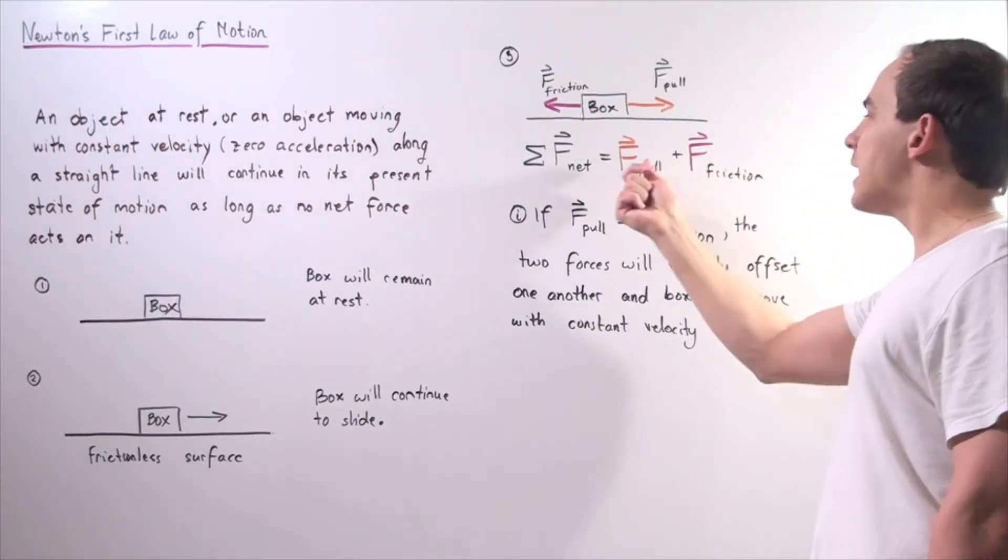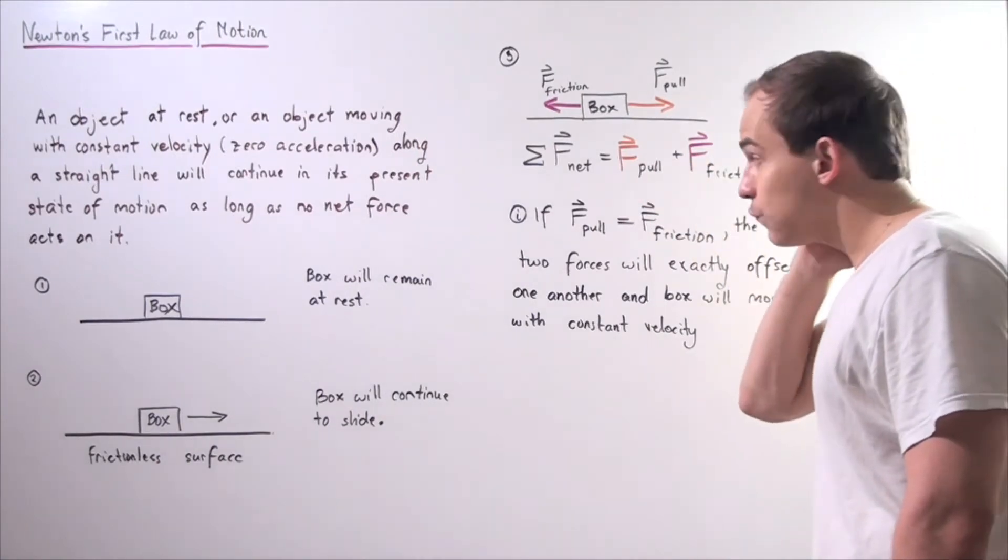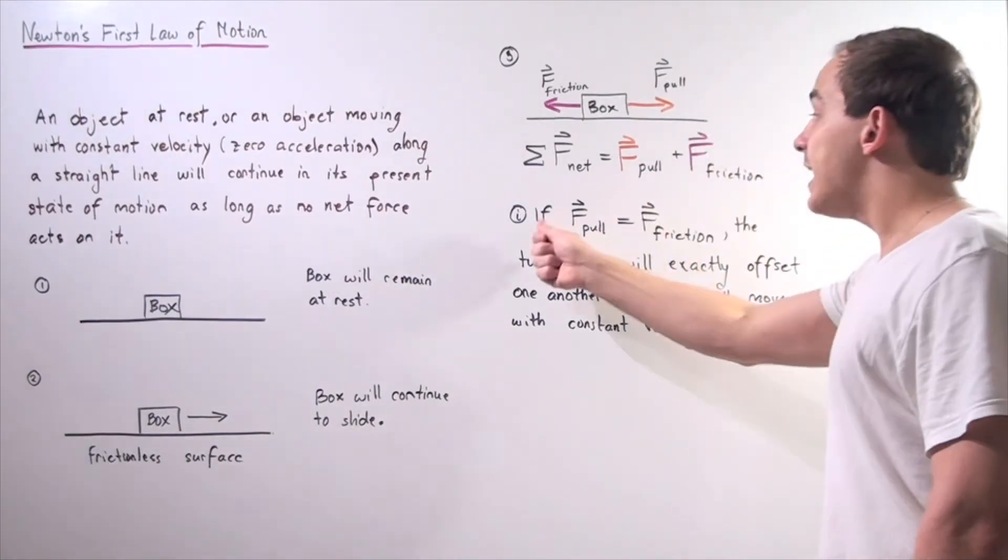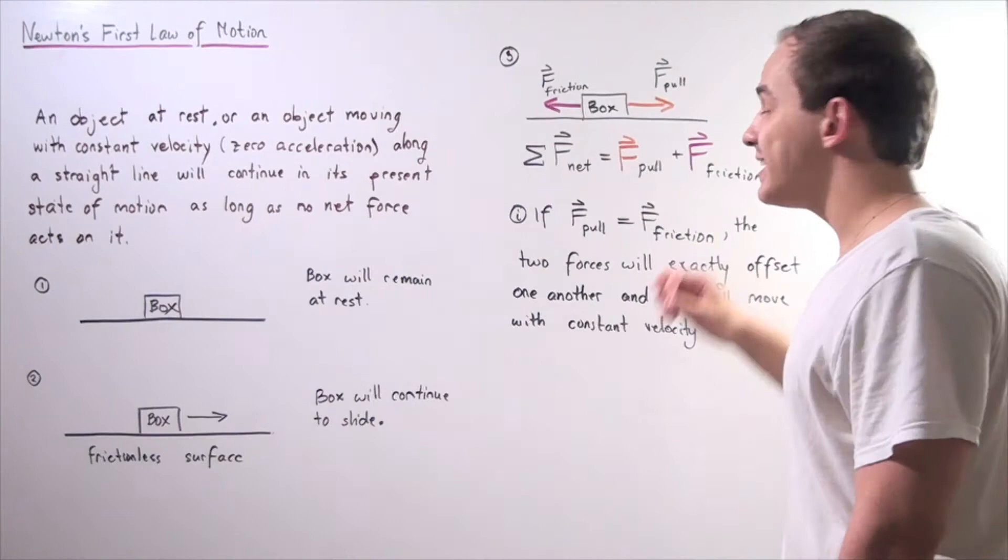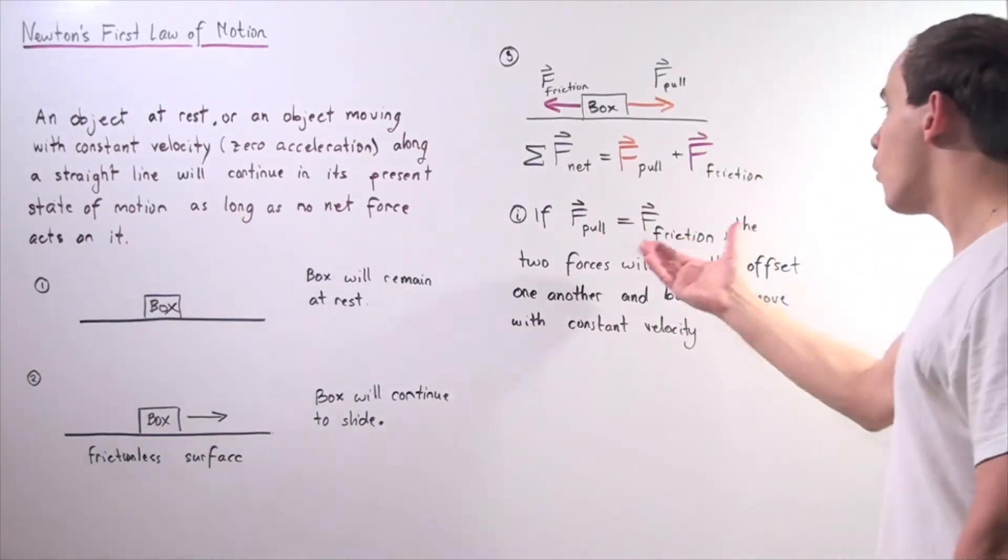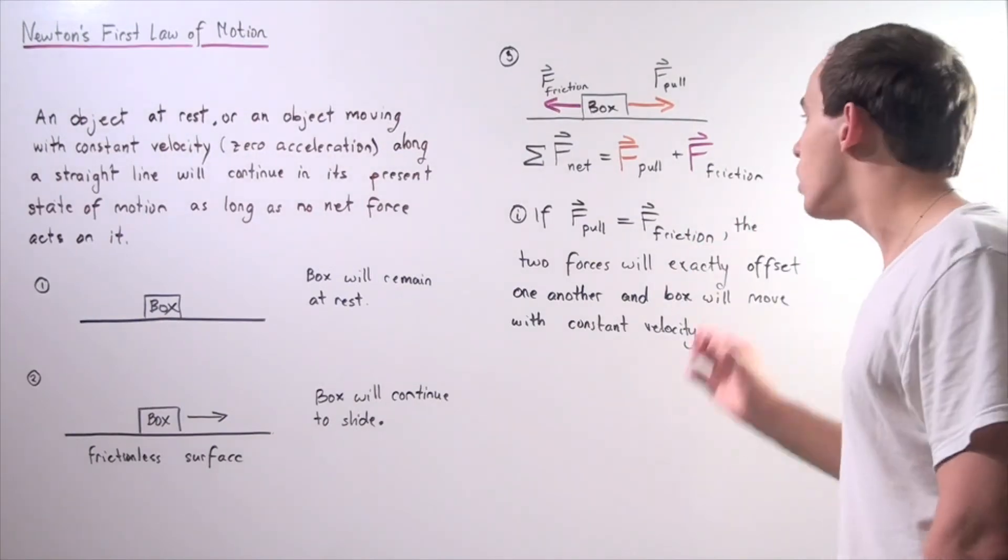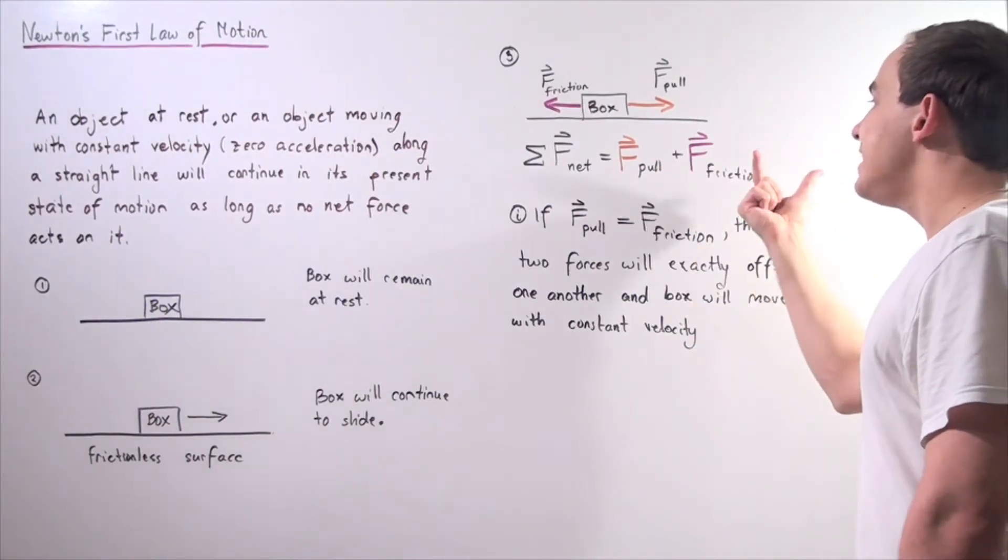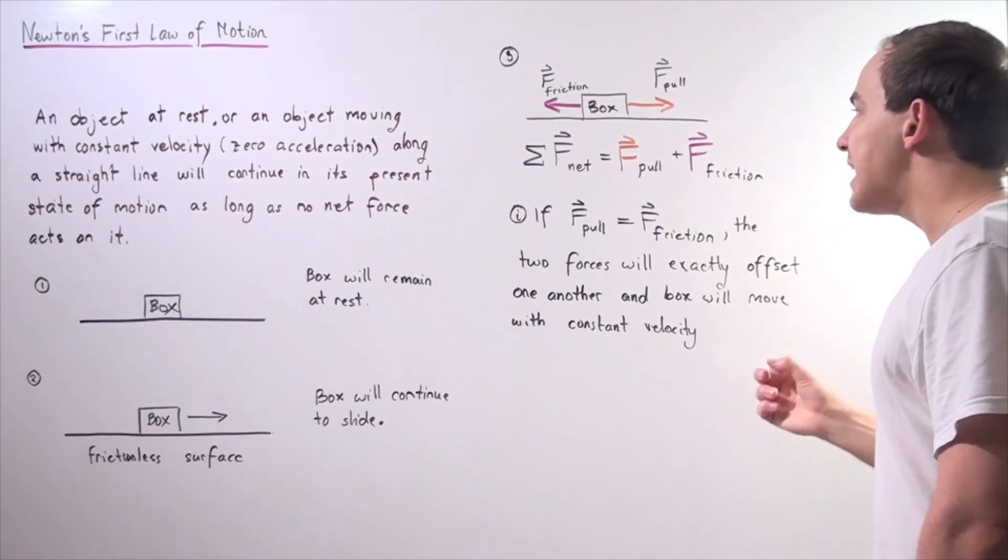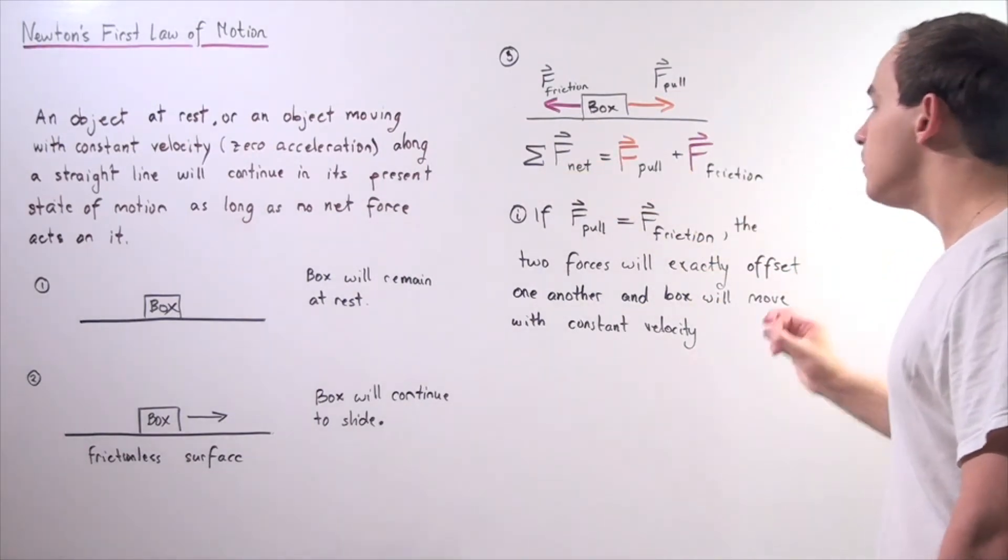So we have the force of the pull plus the force of the friction. Now this is negative, so we're actually subtracting our two forces. Now, if the force of the pull is exactly equal to the force of friction, the two forces will exactly offset one another. They will be equal and opposite, so that means our net force will be zero.